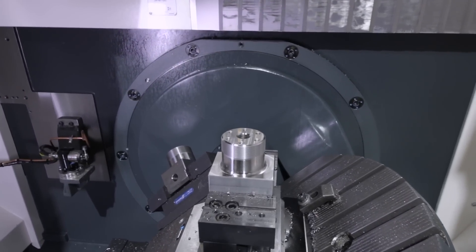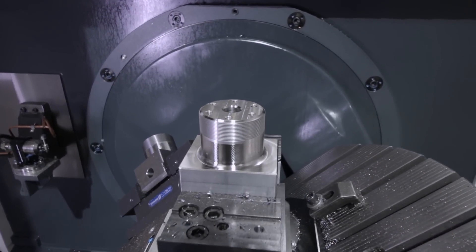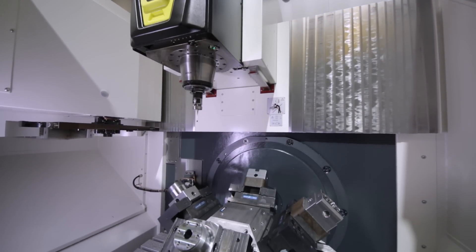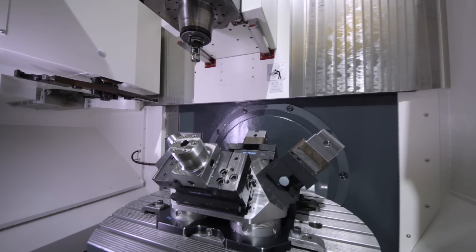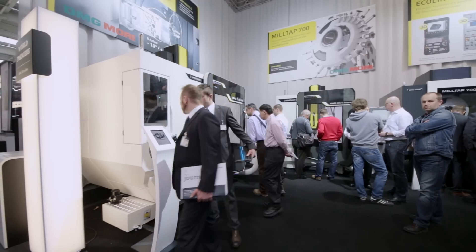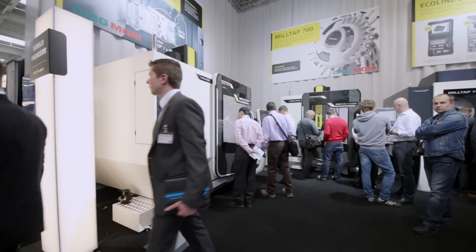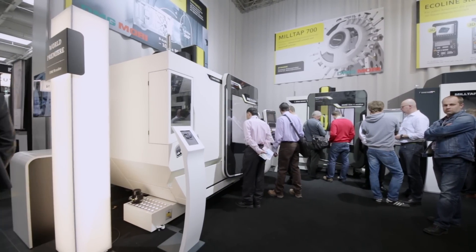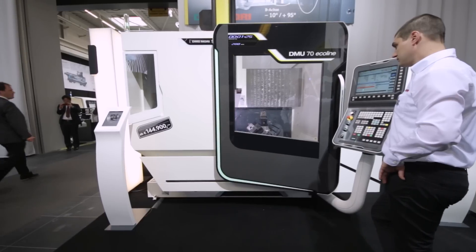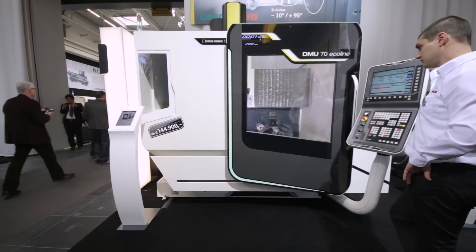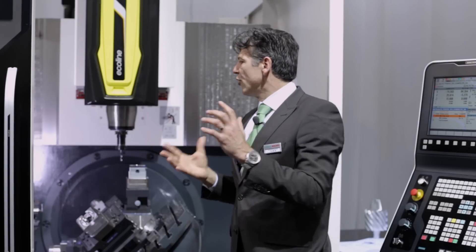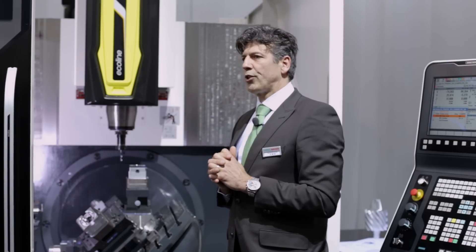We also have a measuring kit package where we have a touch probe to measure the tools, to check the tools, and to do breakage control. And we also have a measuring probe to find the datum set of the workpiece or to check accuracy after machining a part of the workpiece. So these are some common options we always offer to our customers.